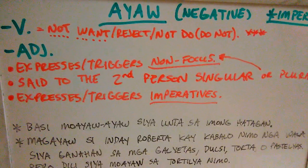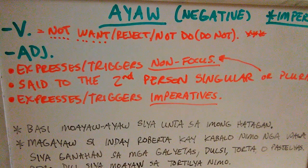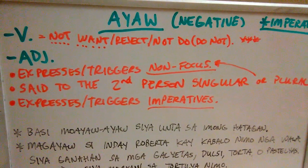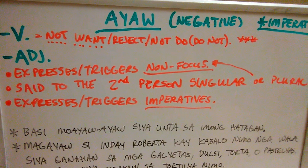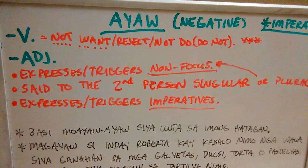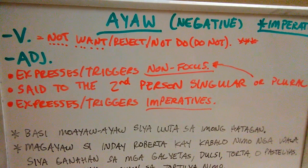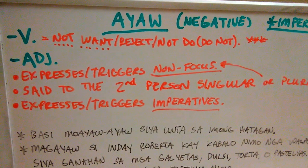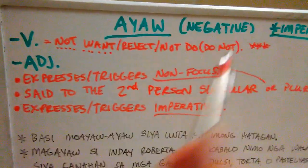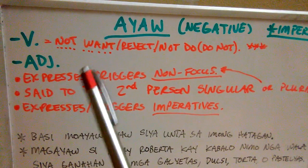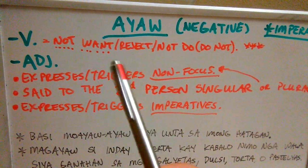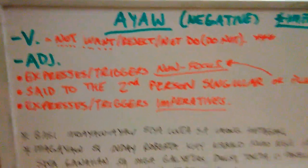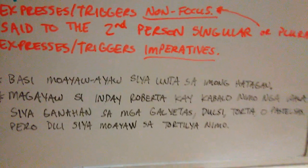Finally, ayaw expresses or triggers imperatives. When we're using ayaw, we can use imperative affixes after it, and I'll show you that in future videos. For this video, we're concentrating on just 'not want' or rejection as a verb with ayaw — not as an imperative.